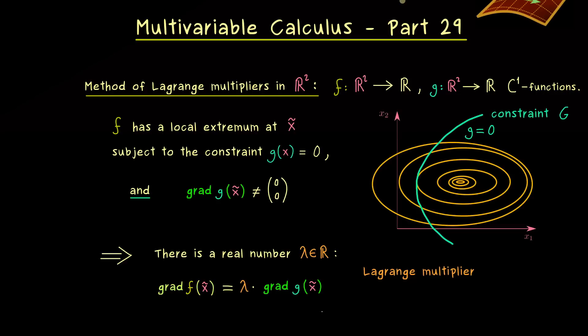Namely we find that the gradient of f and the gradient of g lie in the same one-dimensional subspace. Hence at this point x̃ we find a real number λ which we call the Lagrange multiplier. And then the only difference between the two gradients here is this scalar λ.